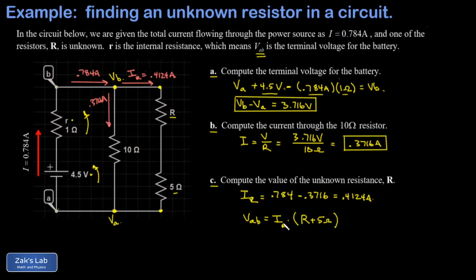So dividing by the current IR and then subtracting the 5 ohms, I can solve for my capital R. And we plug the numbers in for the terminal voltage, that was 3.716. And the current in the right-hand branch, that was 0.4124. And we're going to subtract 5 ohms from that at the end. And I get a resistance of 4.01 ohms.